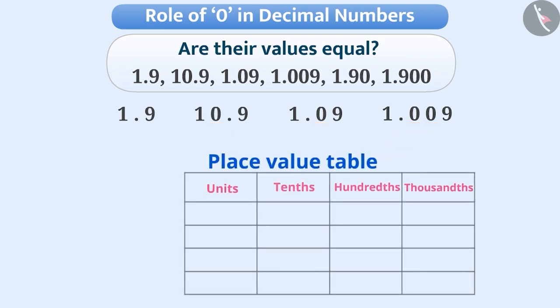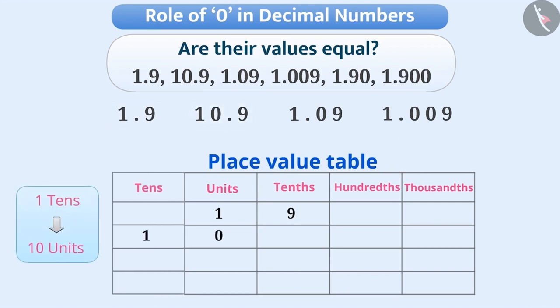Let's write them in the place value table. In this way, you can see that the place values of digits are changed with the use of zero.